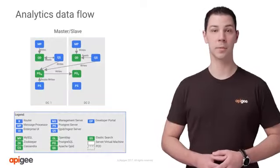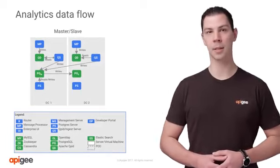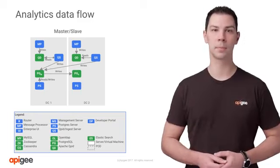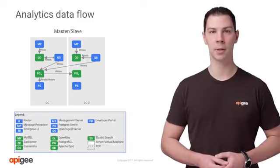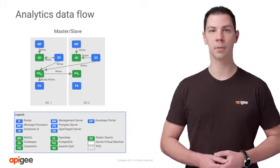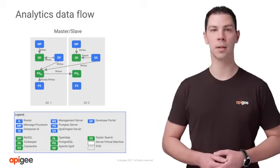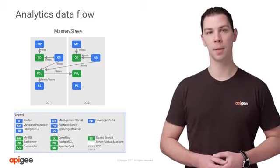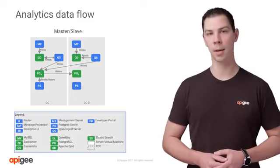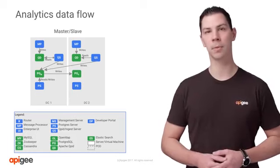Analytics data flow works as follows: analytics events are generated by the message processors, which asynchronously send these events to Qpid. Qpid servers read data from Qpid queues and write data to PostgreSQL. All Qpid servers connect to the PostgreSQL master, as only that database is writable — standby databases are read-only, and the master replicates data to all standbys over time. Analytics events contain raw data about each API request, which is aggregated by the PostgreSQL server. Apigee Edge allows you to query both raw and aggregated data; most reports in the UI use aggregated data, while custom reports use raw data.